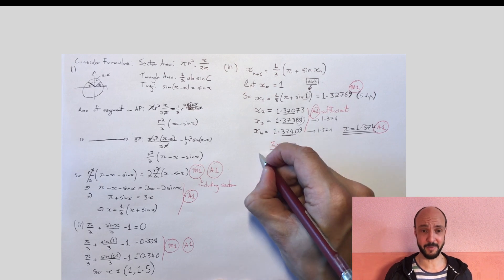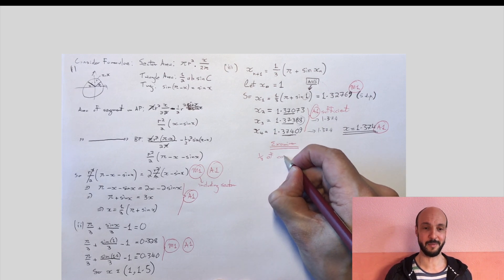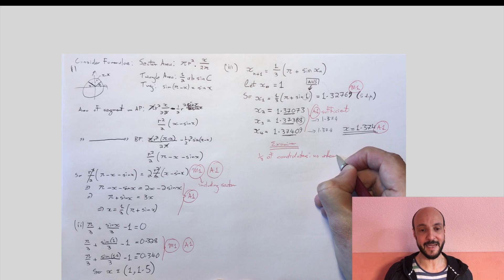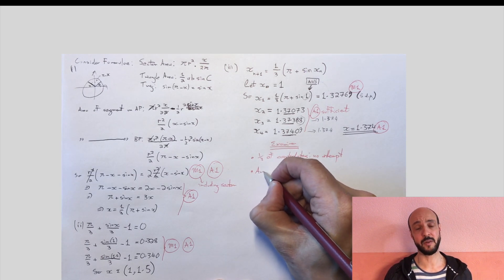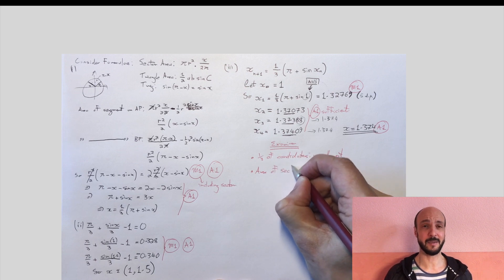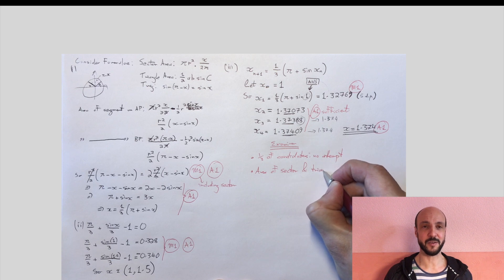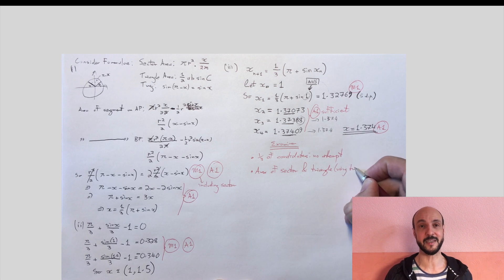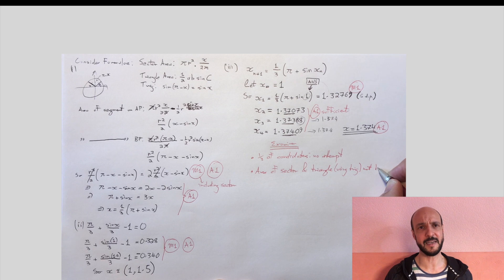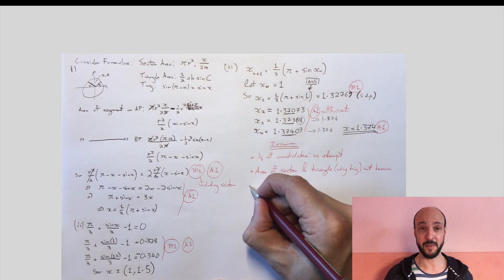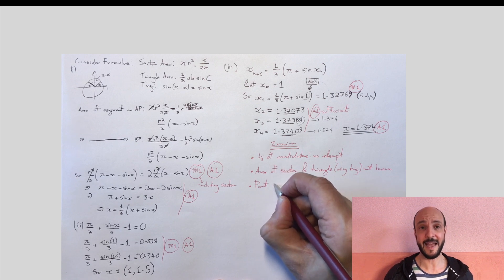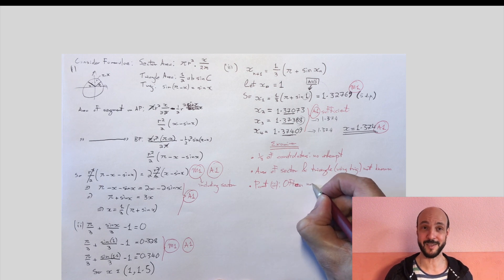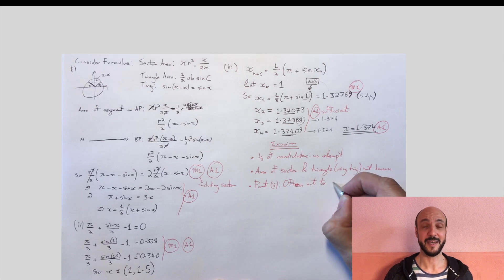So we've already talked a little bit about the examiner's report. Quite strong words from the examiner that a third of the candidates made no attempt at all at the question. It was noted that many candidates didn't know how to find the area of the sector or a triangle. I've already talked a little bit about this. It's difficult when the majority of a course treats algebra and the majority of textbooks are geared towards new calculus techniques with very little explicitly taught about geometry.